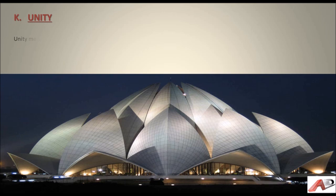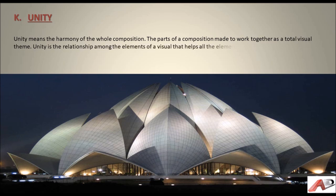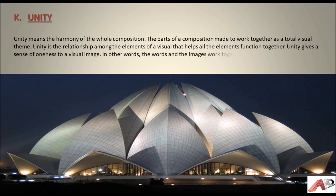Unity means the harmony of the whole composition — the parts of a composition made to work together as a total visual theme. Unity is the relationship among the elements of a visual that help all the elements function together. Unity gives a sense of oneness to a visual image, where words and images work together cohesively.